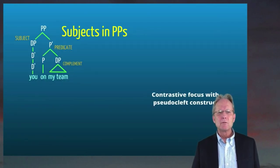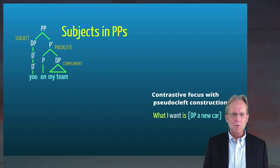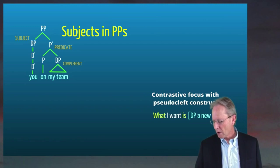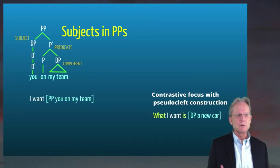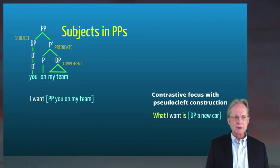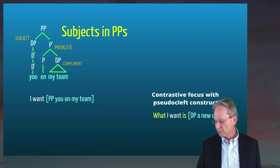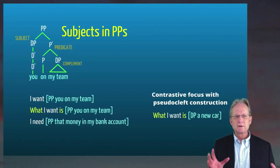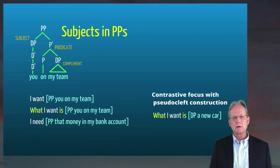If we look at things like contrastive focus in the pseudoclef construction, we can find evidence for you on my team, in fact, being a kind of phrasal constituent. So what I want is a new car. In this case, we're focusing on a new car, a determiner phrase, constituent of the sentence, I want a new car. Because we can put it in focus in this way, we know that a new car is some kind of a phrasal constituent. Let's take the sentence, I want you on my team. Want can have a DP as a complement, but it can also have this other kind of structure, like you on my team as its complement. So we get, I want you on my team, what I want is you on my team, where we're putting into contrastive focus, this entire phrase that includes both the subject, the preposition and the complement.